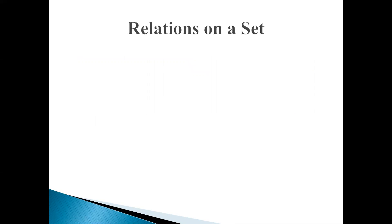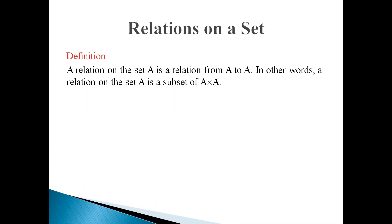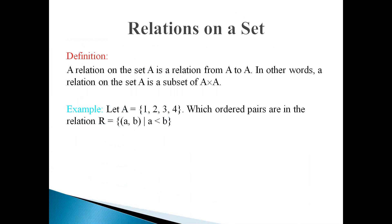When (A, B) belongs to R, then we say A is related to B by relation R. The next point is Relation on set A. A relation on set A is a relation from A to A. In other words, the relation on set A is a subset of the Cartesian product of A and A. For example, suppose we have only one set A equal to {1, 2, 3, 4}.